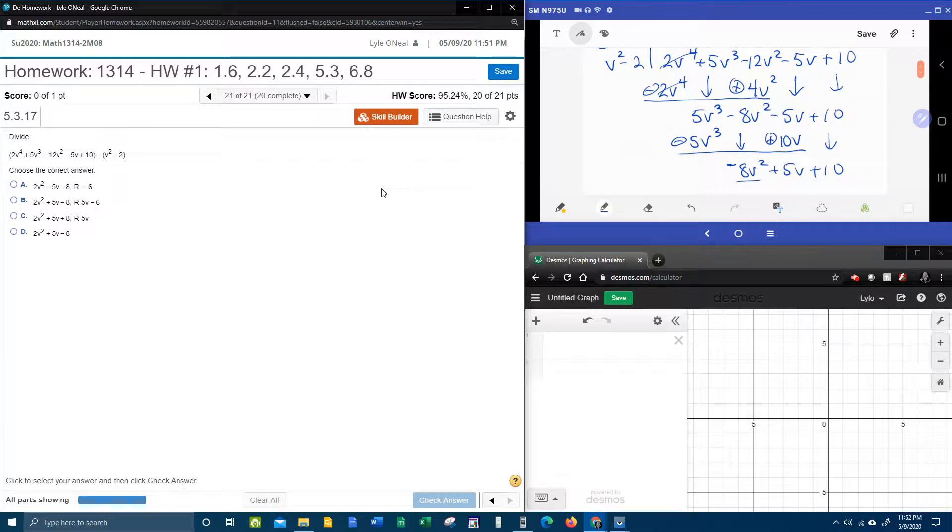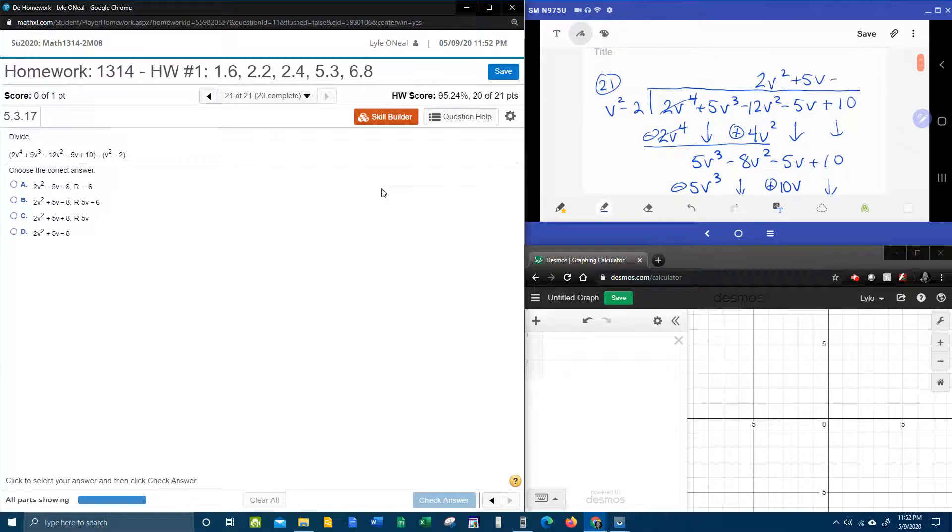Divided by v squared. Those v squareds are going to cancel. And that's going to leave us negative 8. And that is the last term of the quotient. So we now know what the quotient is. And if you come over here to the multiple choice answers, you're going to see that we know the answer is b, unless there's no remainder. b and d have exactly the same quotient. And now it depends on the remainder. So we are going to have to crank this remainder out.